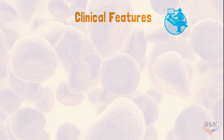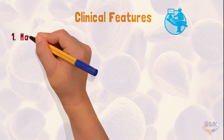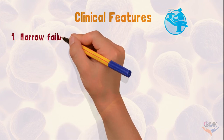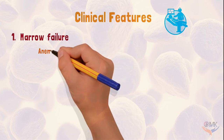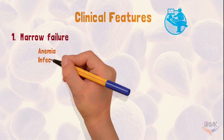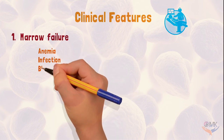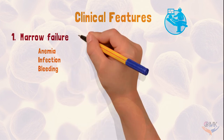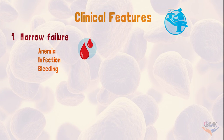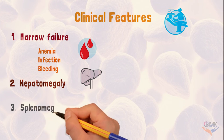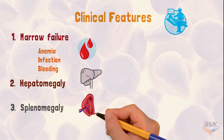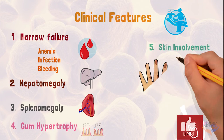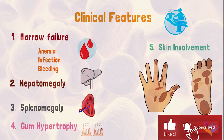Clinical features of acute myeloid leukemia are those associated with marrow failure, such as anemia due to decreased RBC count. Patients are more prone to infections due to decreased amount of normal WBCs, and bleeding due to reduced number of platelets. Along with that, hepatomegaly, splenomegaly, gum hypertrophy, and skin involvement are also seen.